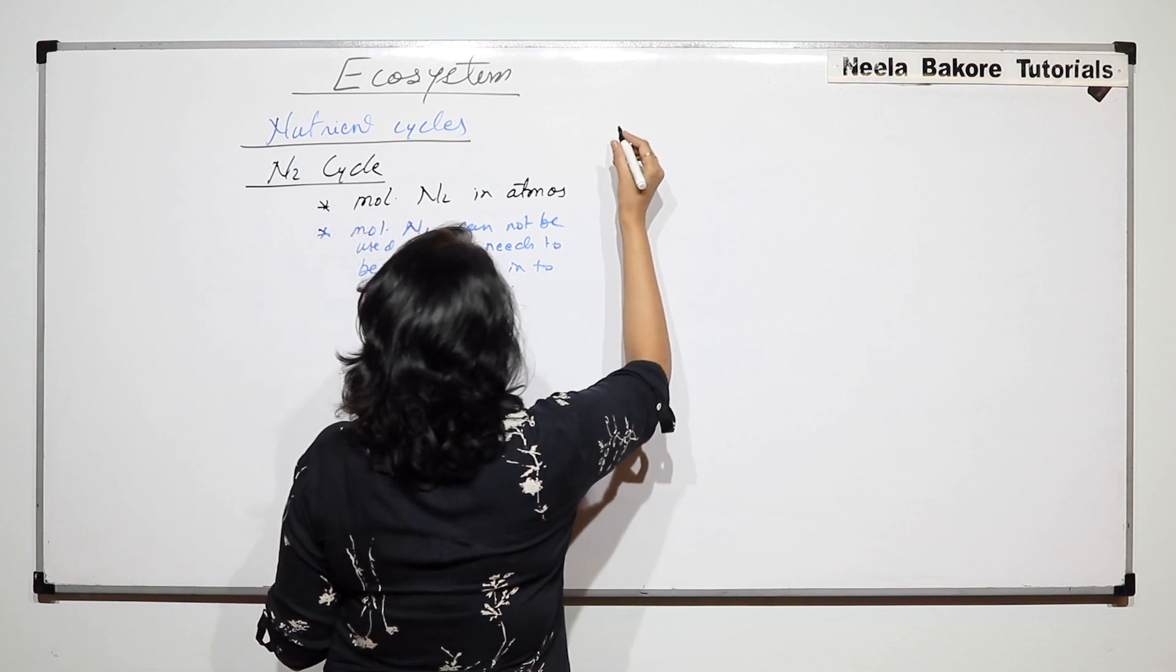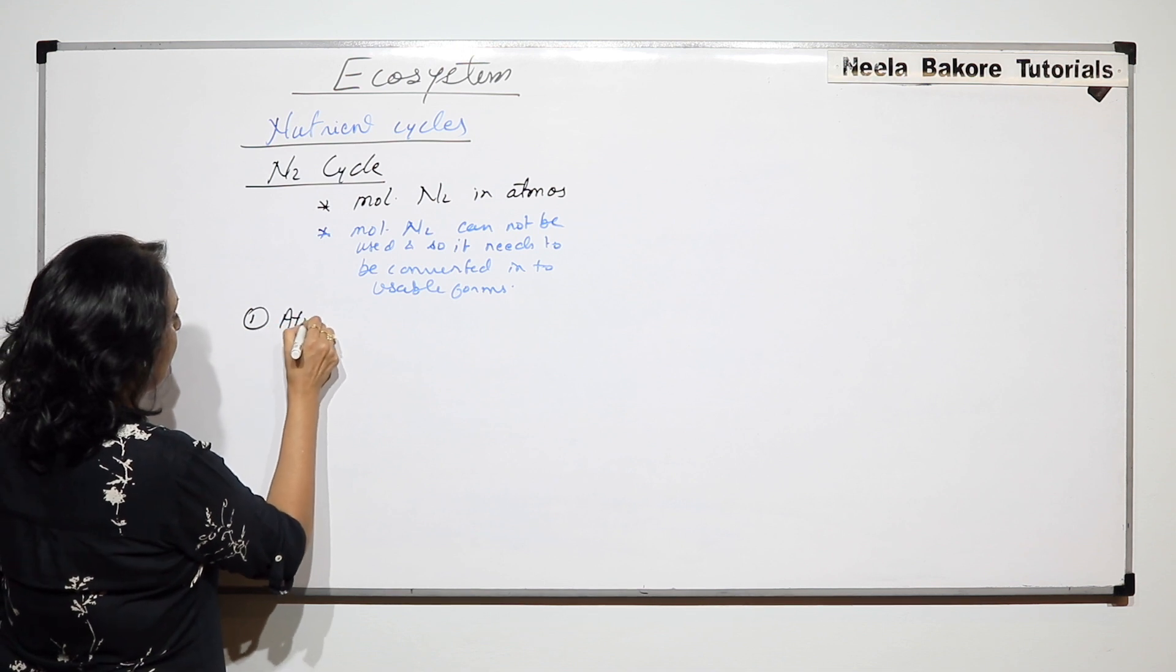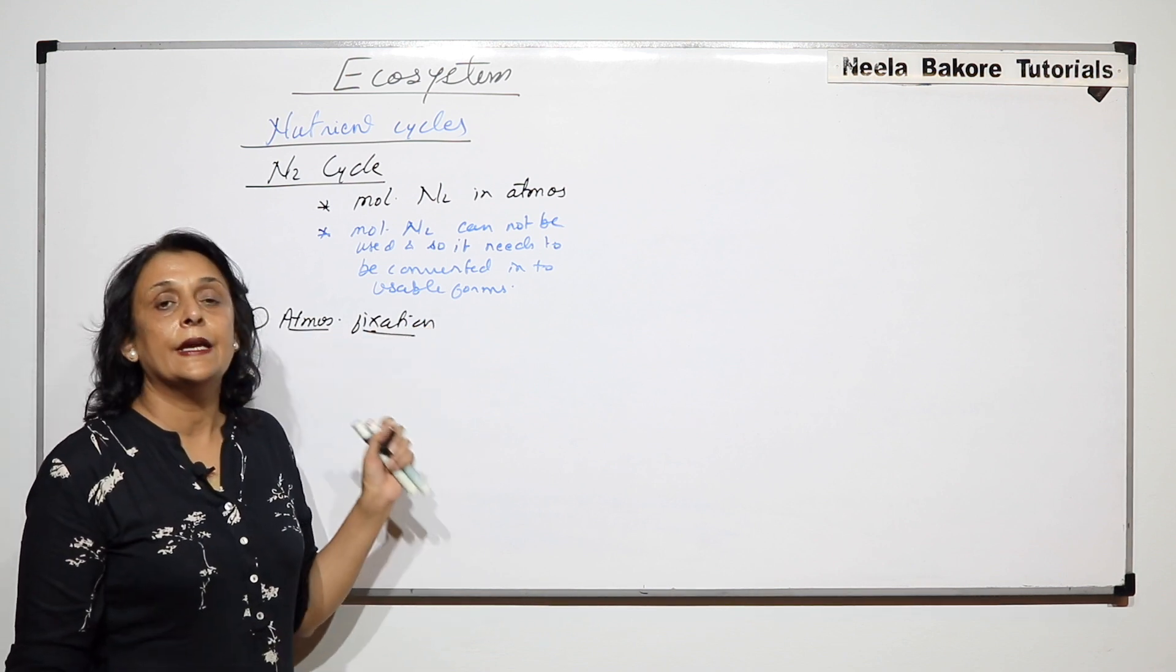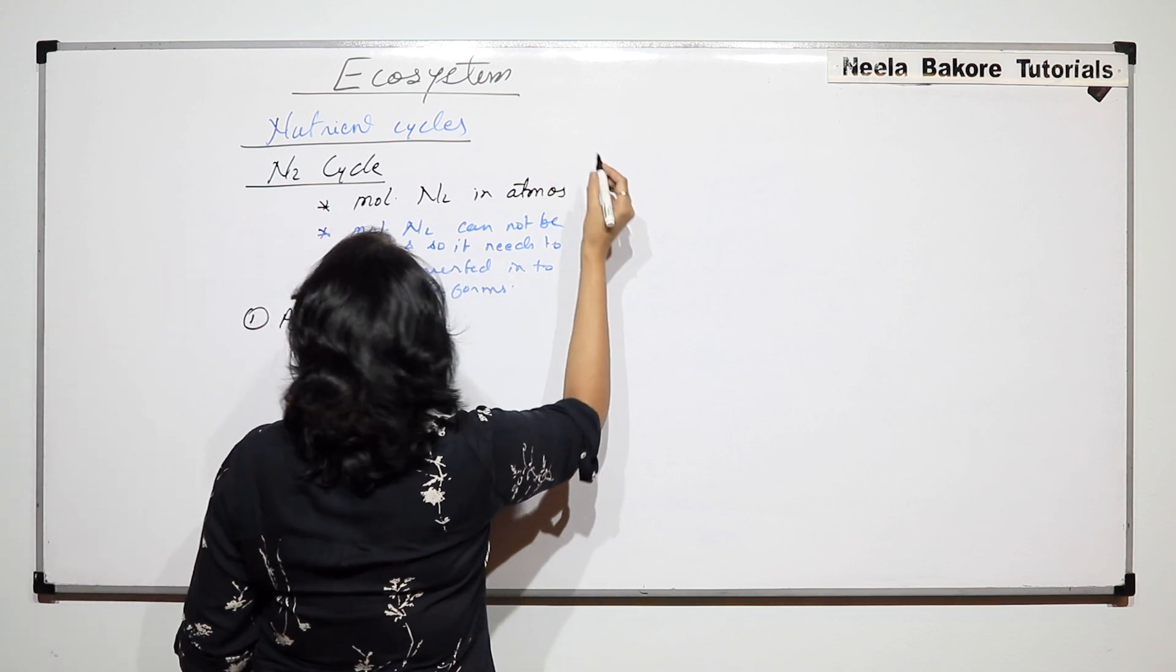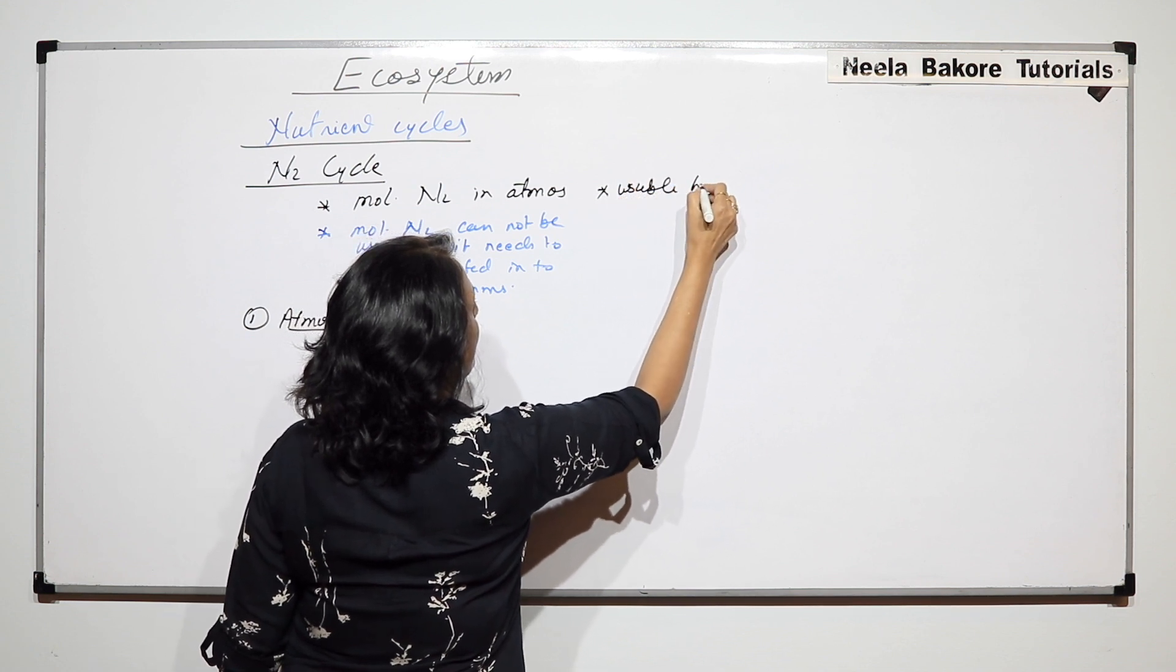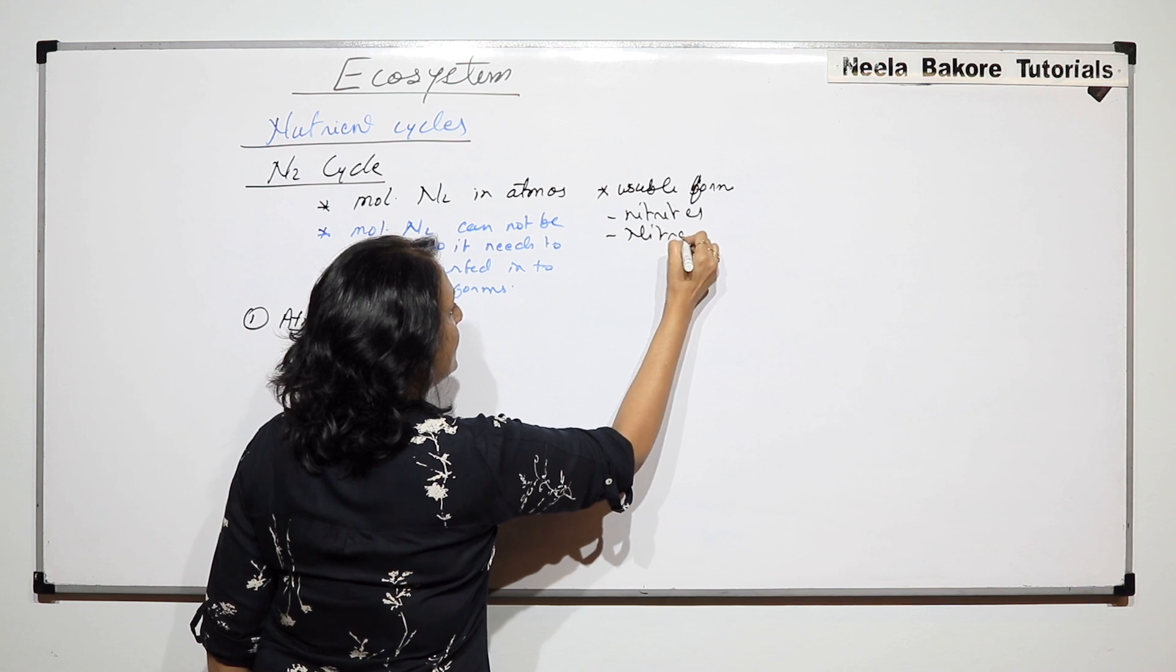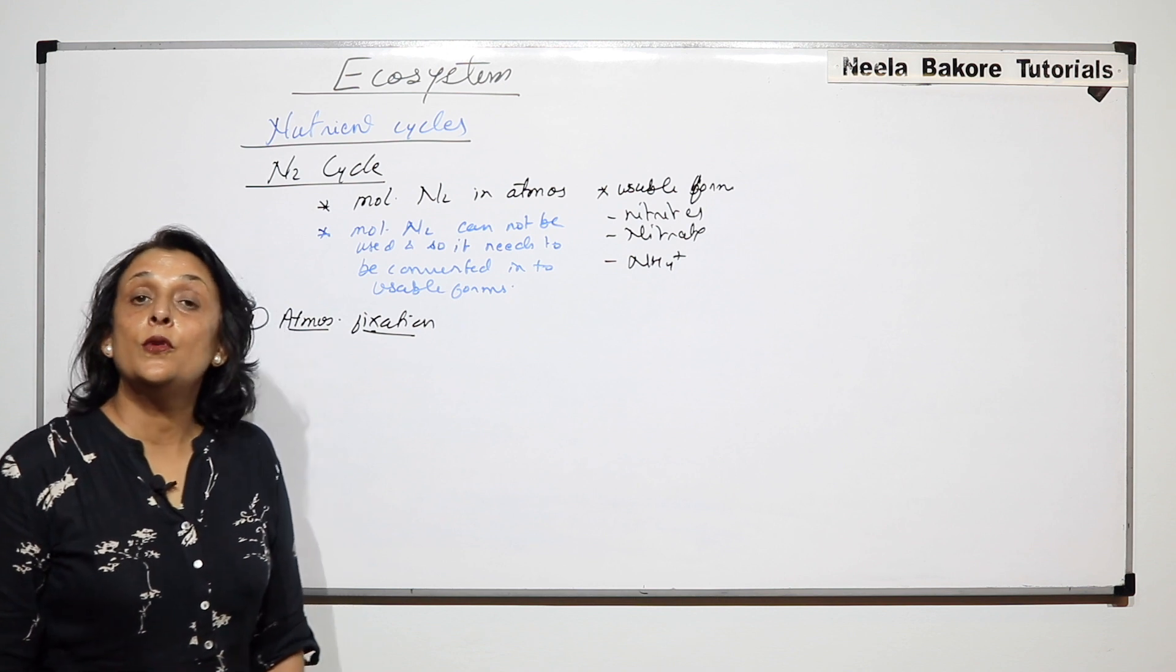The first is atmospheric fixation. Fixation word here is being used for converting that molecular nitrogen into usable form. Now what are these usable forms? Usable forms are nitrites, nitrates and ammonium ion. These are the three usable forms.